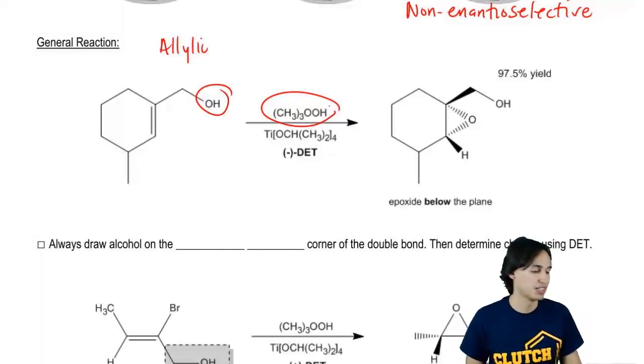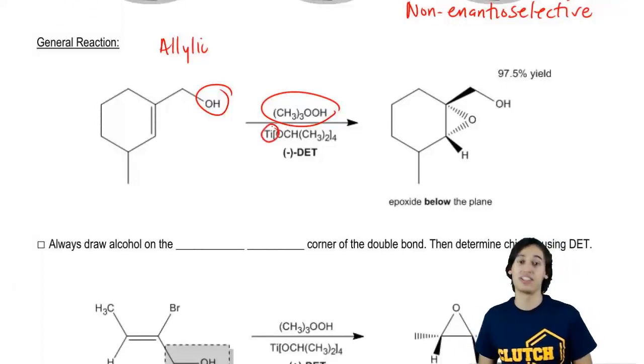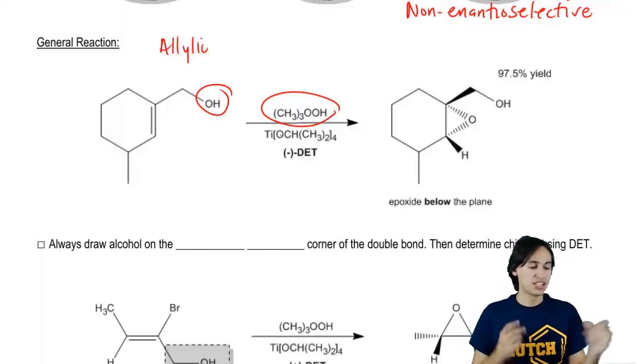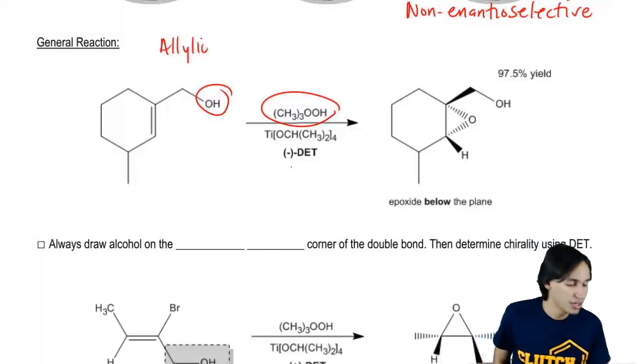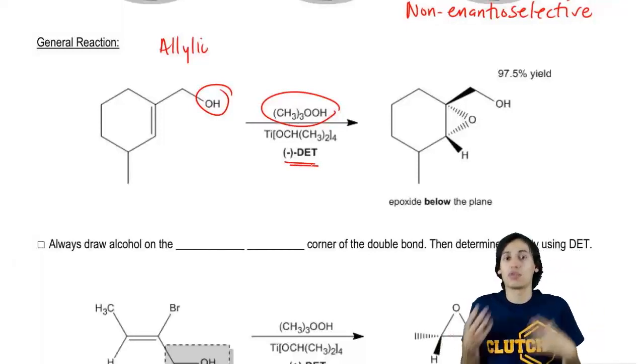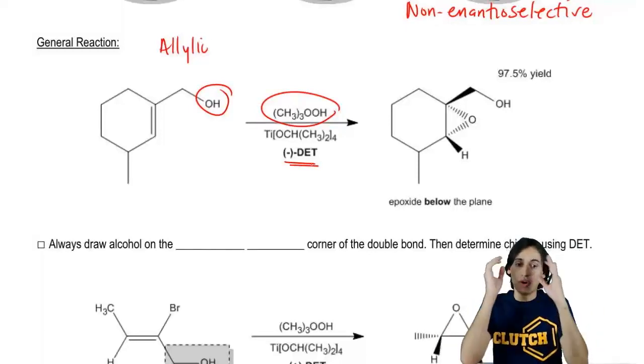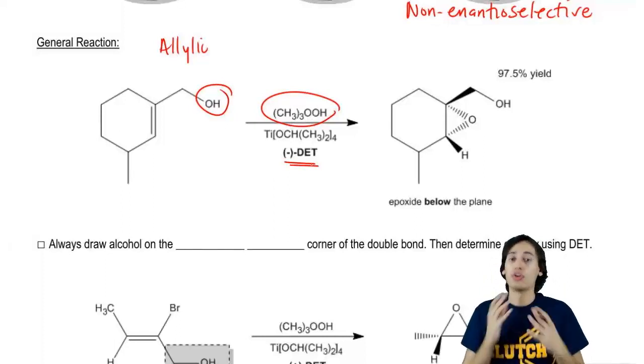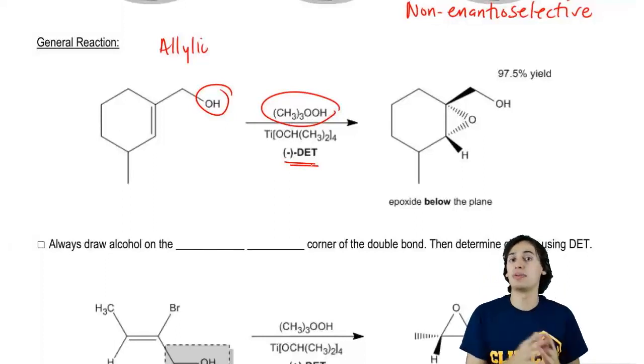Don't worry too much about the titanium catalyst. You'll just see that there's Ti there. That stands for titanium. There's a titanium catalyst and then we use one of the tartrates, either negative or positive. And when you put all those things together, what you're going to wind up getting is the epoxide in the place that you want it.